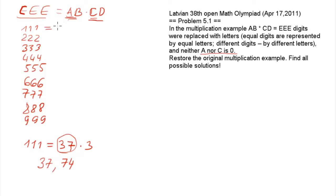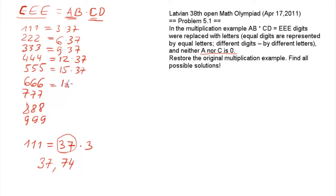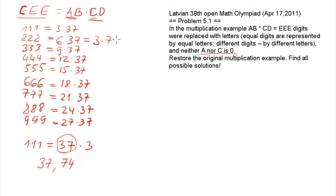Let's write all the products: 3×37, 6×37, 9×37, 12×37, 15×37, 18×37, 21×37. And those which are even can also be expressed as something times 74.